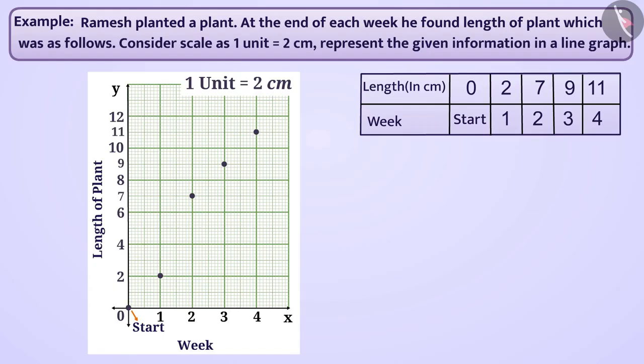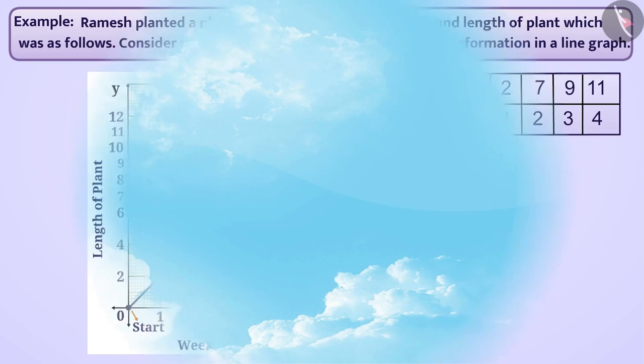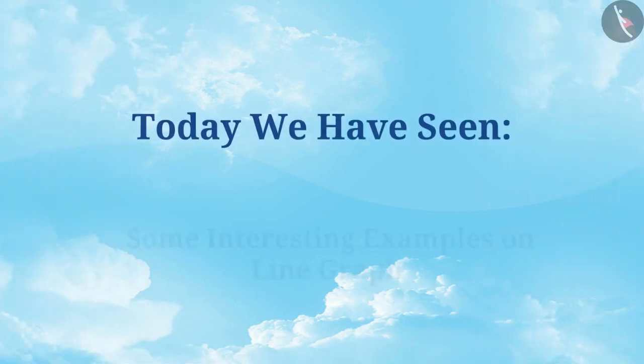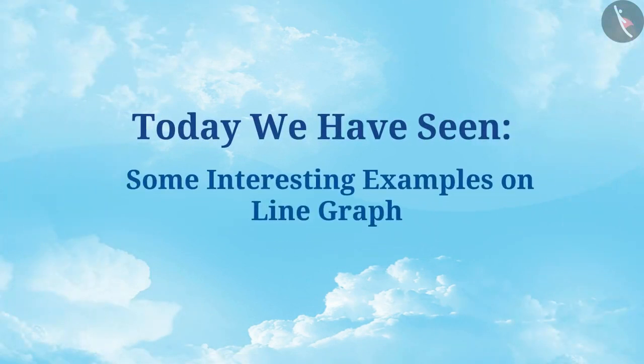for all observations. Now, we will connect all the points with line segments. We have shown an increase in plant length over time as a graph. Therefore, we can call it a graph of time growth. Today, we have seen some interesting examples on line graph. In the next video, we will see some more examples.